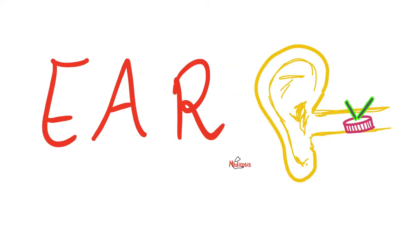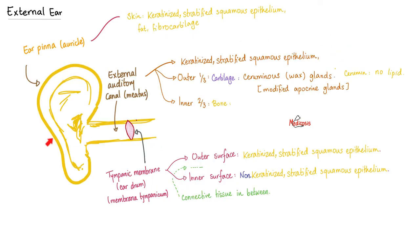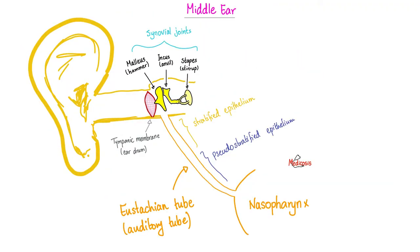Quick review on the anatomy of the ear. We have the external ear, middle ear, and inner ear. The external ear has the ear pinna, external auditory meatus, and the tympanic membrane, or membrana tympanicum. After that, we have the middle ear, which has the famous three ossicles. Don't forget that the Eustachian tube communicates between the middle ear and the nasopharynx. That's why the most common cause of otitis media is spread of inflammation from upper respiratory tract infection into the middle ear through the Eustachian tube.